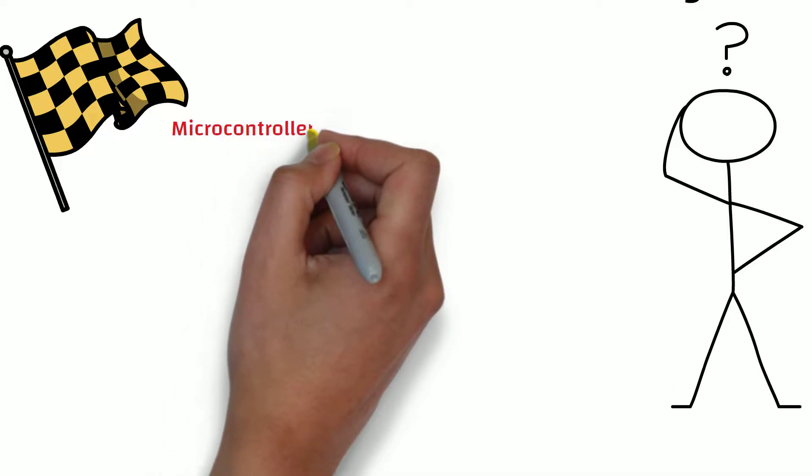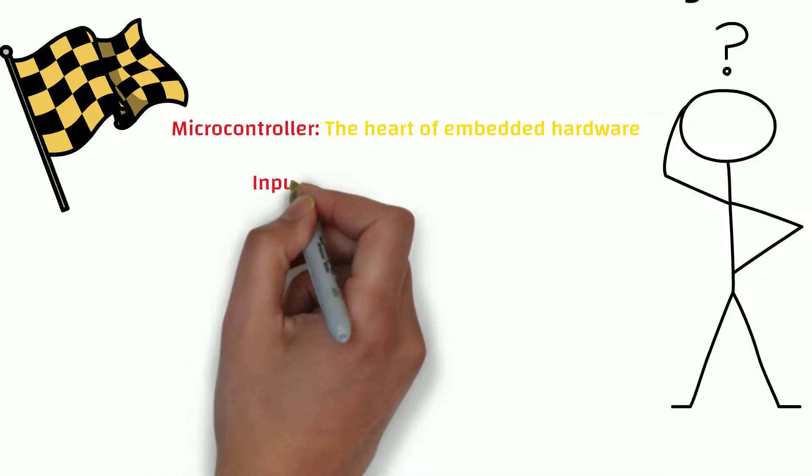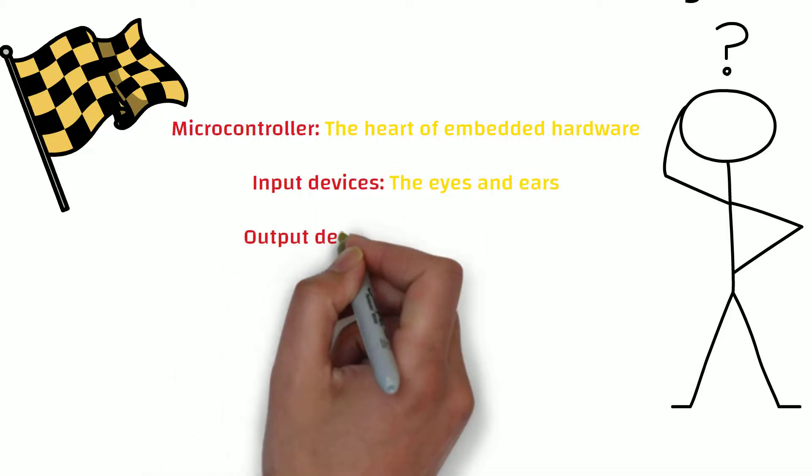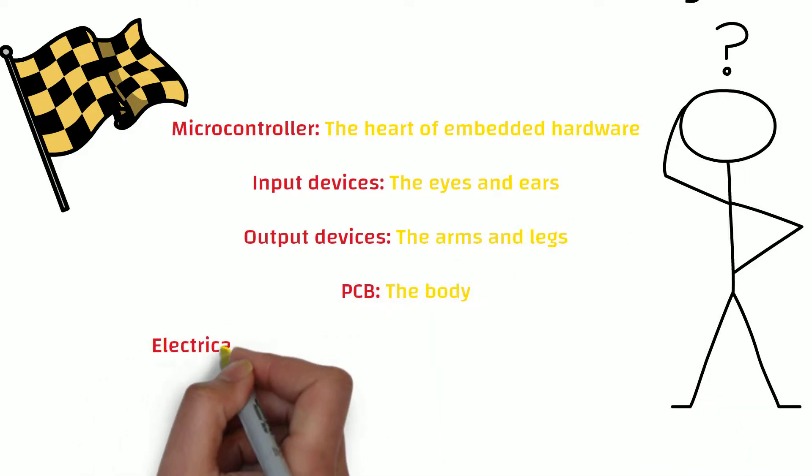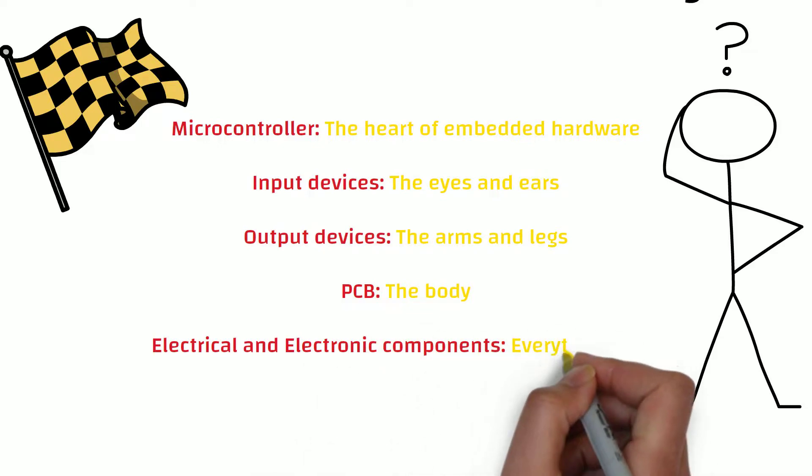Microcontroller that can be thought of as the heart of embedded hardware. Input devices that can be thought of as the eyes and ears. Output devices that can be thought of as arms and legs. PCB that can be thought of as the body. Electric and electronic components can be considered as everything else.